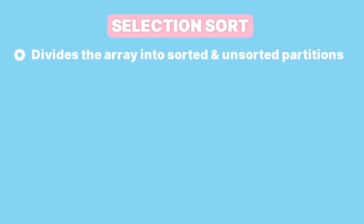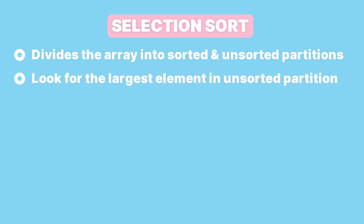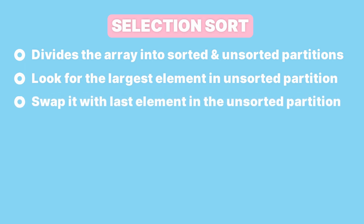Hey everyone, in this video we're going to have a look at the selection sort algorithm. This algorithm, just like bubble sort, separates the array into a sorted and an unsorted partition. The goal is to traverse the array, look for the largest element in the unsorted partition and swap it with the last element in the same unsorted partition. And once we've done that, that element will be in its correct sorted position.